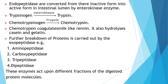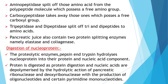Exopeptidases include aminopeptidase, carboxypeptidase, tripeptidase, and dipeptidase, which act upon different fractions of the digested protein molecule. Aminopeptidase splits off amino acids from the polypeptide molecules which possess a free amino group; carboxypeptidase removes those which possess a free carboxyl group. Tripeptidase and dipeptidase split tri- and dipeptides to amino acids. Pancreatic juice also contains two protein-splitting enzymes: elastase and collagenase.